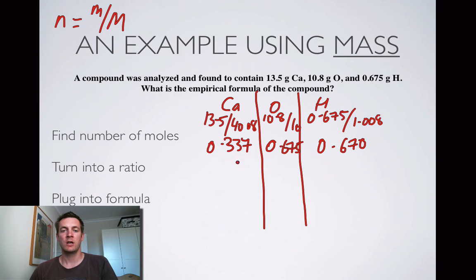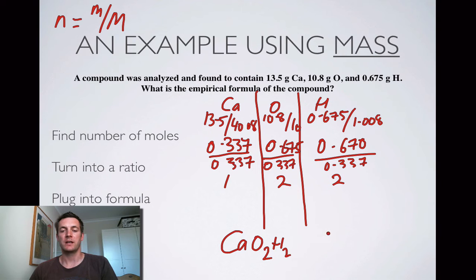Turn these things into a ratio. Now I could divide them all by 0.337. I could do that on my calculator. Or I could just look at them and see that I've got a ratio that is approximately 1 to 2 to 2. So I've got to plug these things into a formula. So I'm going to have one calcium, two oxygens, two hydrogens. So CaO2H2. And in actual fact, the formula for that is Ca(OH)2, but there's no way of telling that from the numbers. So if you write this, it would be absolutely fine.